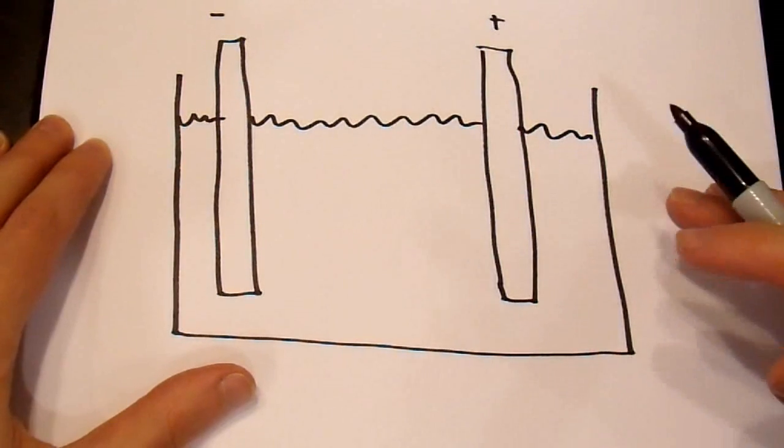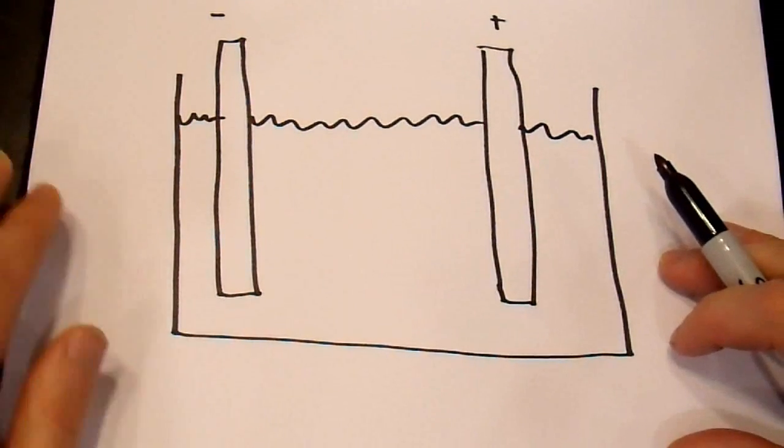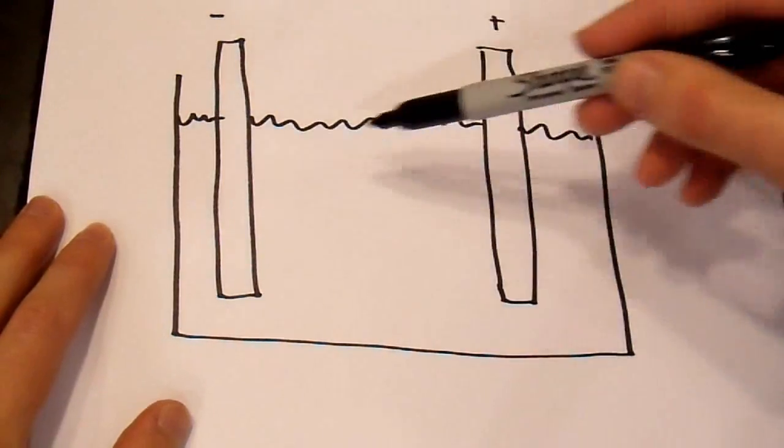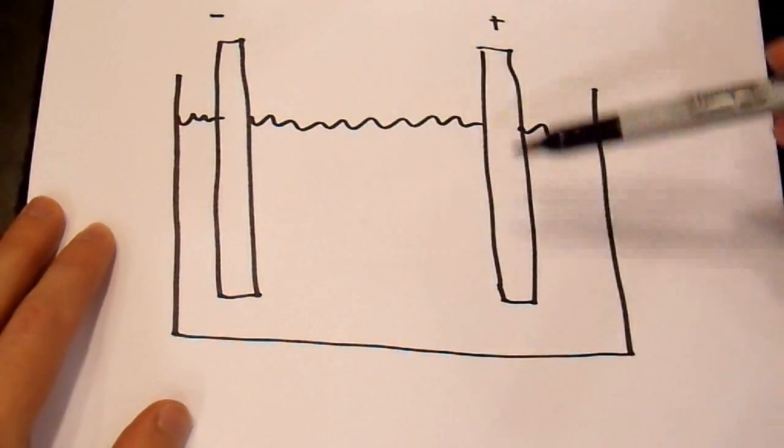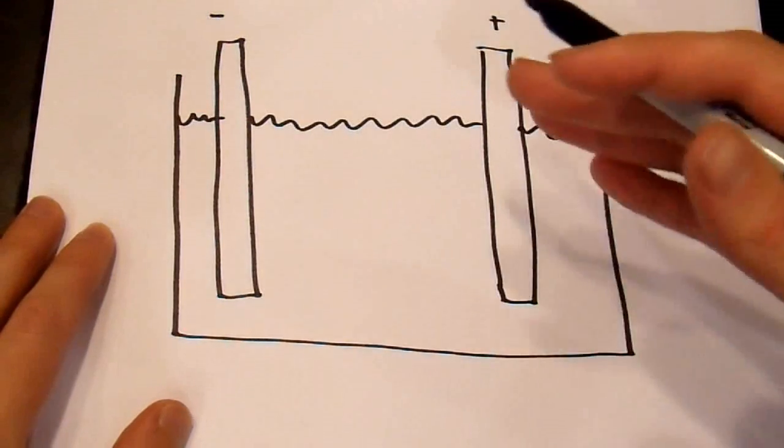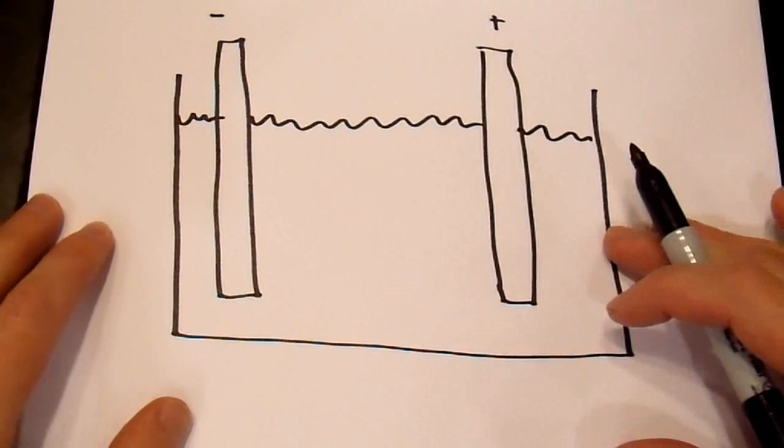Now, in a real battery, these are very carefully calibrated parameters. The concentration, molality of the acid, how much lead is in here, the surface preparation of the lead, how they're physically arranged. All of these things that have to be very carefully calibrated to get a useful battery.